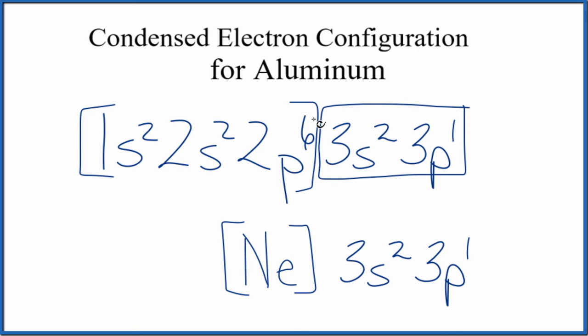We have these 10 electrons here represented with neon, and then we have this 3s2, 3p1. These are the valence electrons for aluminum.